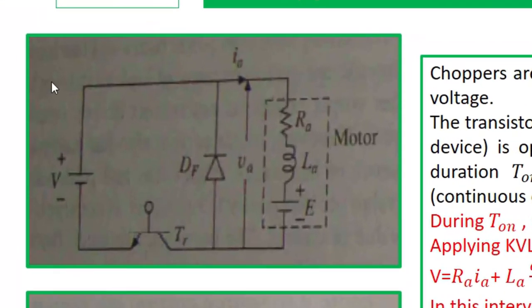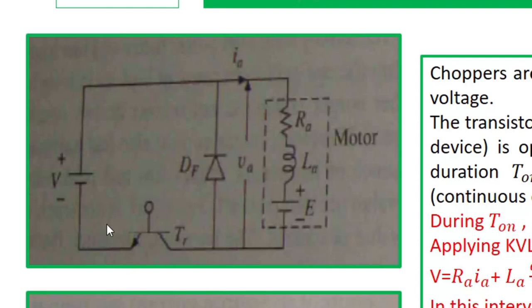In this circuit there is only one switch, a DC input voltage, and an RLE load which can be considered as a motor load. There is a freewheeling diode connected in parallel with this motor. This switch may be a MOSFET, IGBT, or thyristor based on the switching frequency and power application. Here a transistor is shown — collector-to-emitter current will flow whenever base current is present across the terminal.